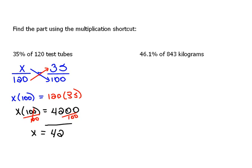So now, we always want to, when we're done, make sure that this sounds reasonable. If I want to know 35% of 120, well, just think about that. Would that be smaller than 120 or more than? It would be smaller, wouldn't it?